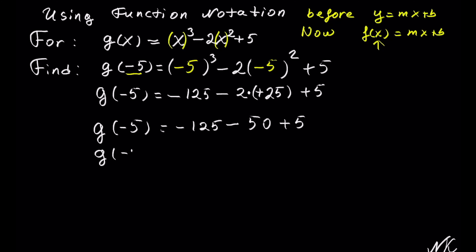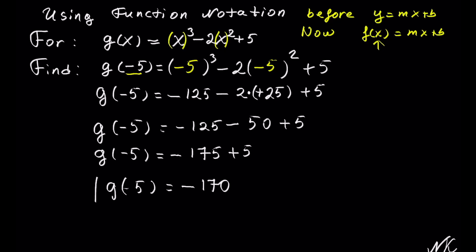So g of negative 5 is equal to — combining from left to right — we have negative 125 minus 50. Same sign, we look for the sum, and it will be negative: 125 plus 50 is 175, plus 5. So g of negative 5 is negative 175 plus 5. Different signs, we look for the difference — we have more negatives — so the difference is negative, and 175 minus 5 is 170. So g of negative 5 is equal to negative 170.